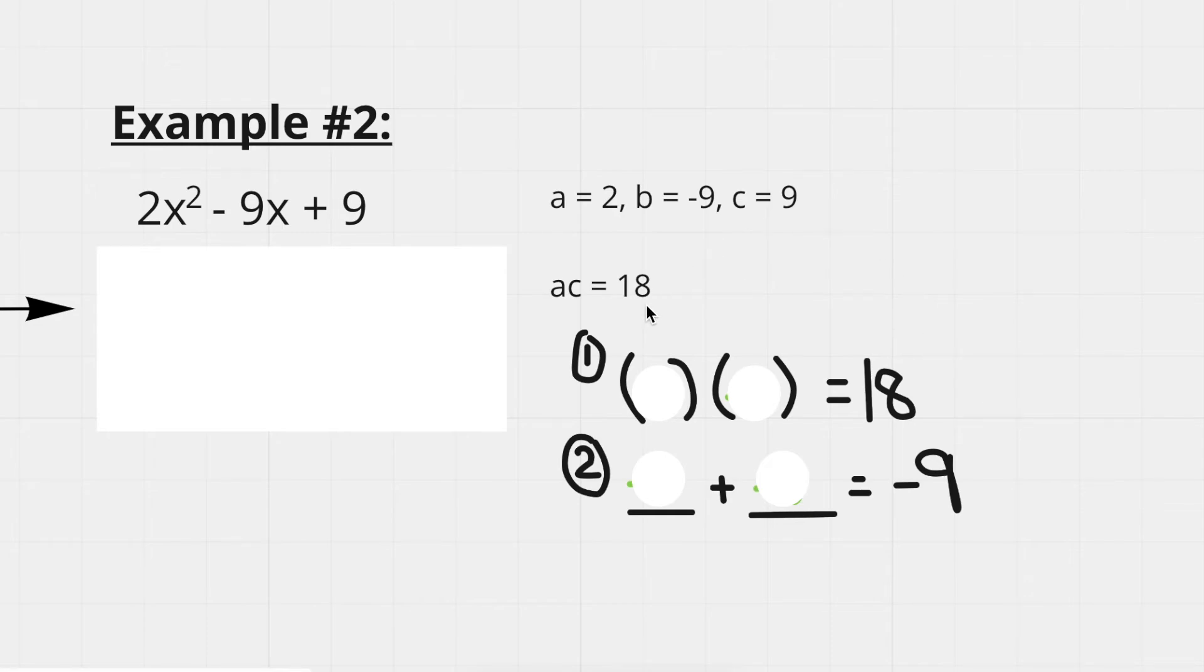Okay, so the numbers I found were negative 3 and negative 6. So negative 3 and negative 6 multiply to give you 18, as the negatives cancel out. And negative 3 plus negative 6 is the same as negative 3 minus 6, which gives you negative 9.